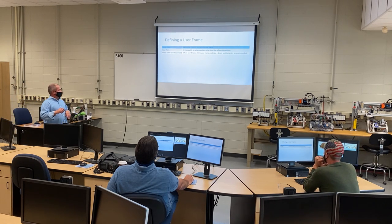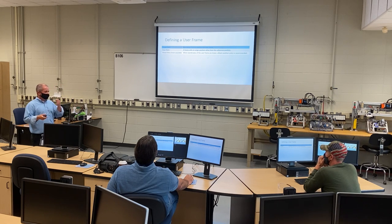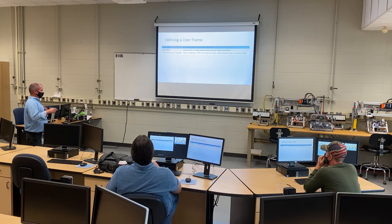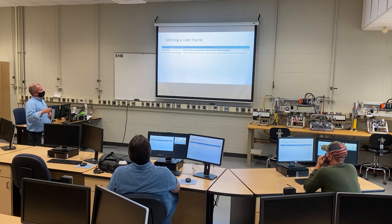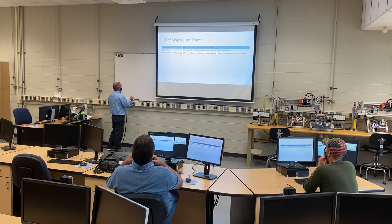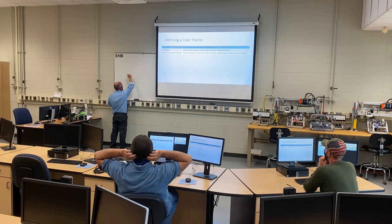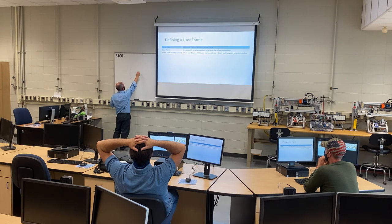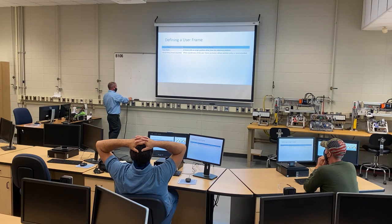Defining a user frame: you have three-point, four-point, and direct entry. Direct entry could be an exact model of your cell, which is great if you have it — though in my experience it's not common to have an accurate layout of the cell. Recording a three-point defines a user frame with an origin position. A four-point option allows a different reference position — useful if you want a different origin for your coordinate system.